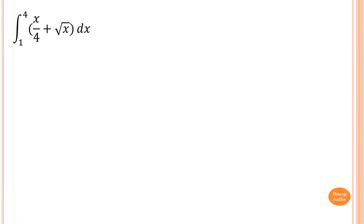Now let's try this one. I'll give you a clue — first of all, square root of x, you can convert and write this as x to the power of a half. Then you just integrate normally and substitute the value in. Try this yourself and see if you can.